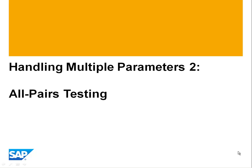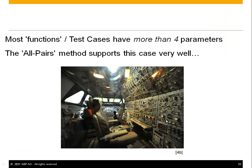We now finally come to the second method to handle multiple parameters, called all pairs testing. Most functions, or test cases if you will, have more than four parameters. That is true for anything non-trivial, and this is where combinatorics hurts especially. The all pairs method supports this case very well, and we're going to look at this in detail now.